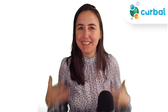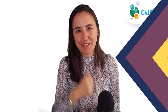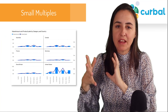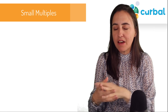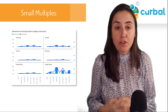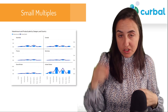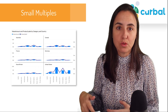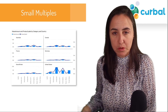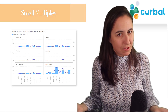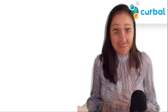First update: small multiples. They are continuing to develop the visual and have now added padding control. For combo charts — the bar chart with the line chart — you can now also do small multiples. They are adding small multiples to more and more visuals, which is great.